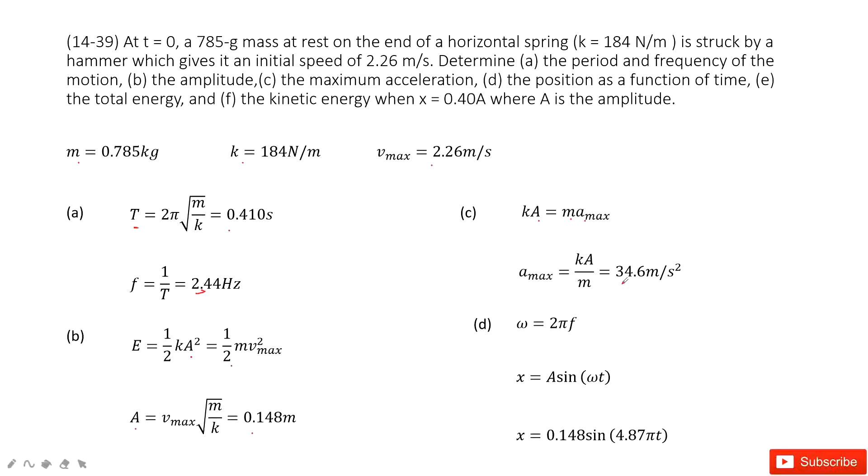The next one, we need to write the function for this oscillator. For the oscillator, we write it because it starts at the initial position. It is at the equilibrium position. It gets the maximum speed. So that means this function is a sine function. So we need to find A sine omega t, A, and omega we need to find.